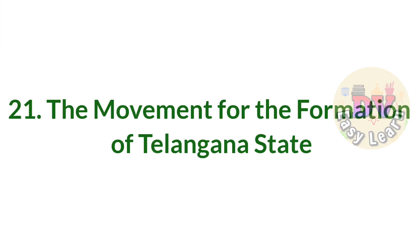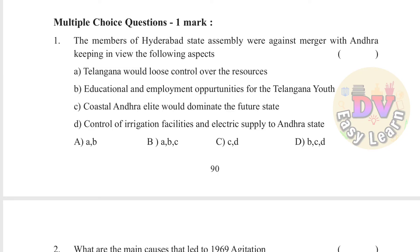Chapter 21: The Movement for the Formation of Telangana State. Question 1: The members of Hyderabad State Assembly were against merger with Andhra keeping in view: Telangana would lose control over its resources, and educational and employment opportunities for Telangana youth. Coastal Andhra elite would dominate the future state.